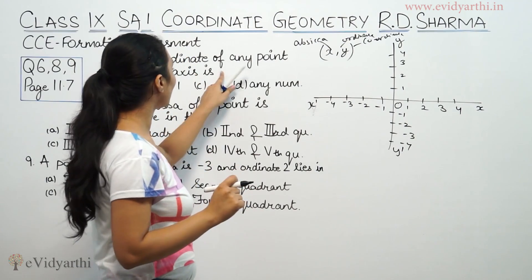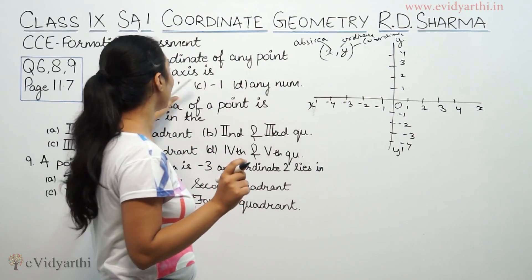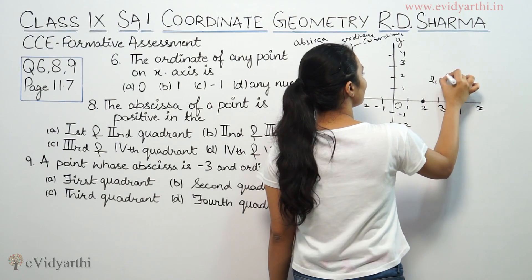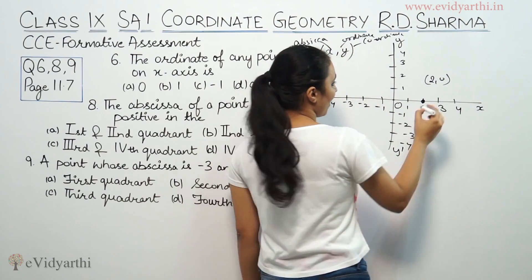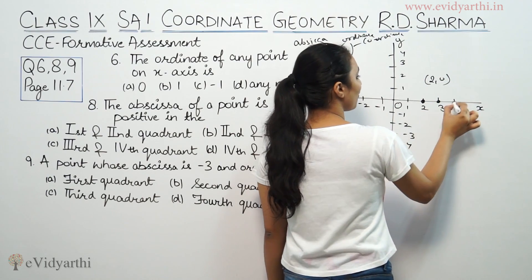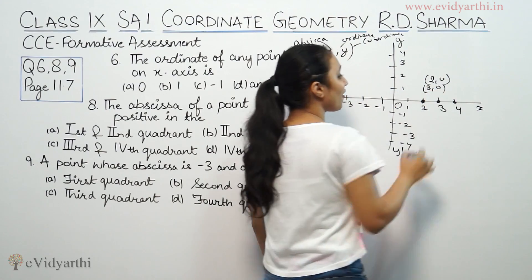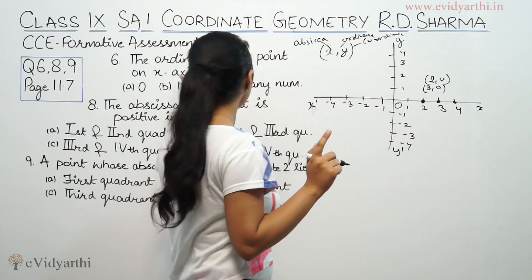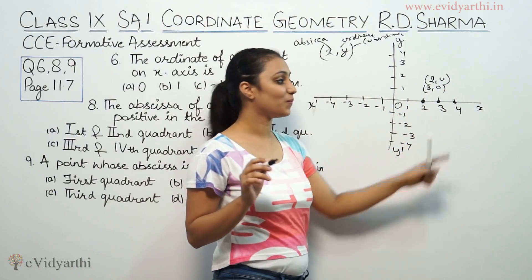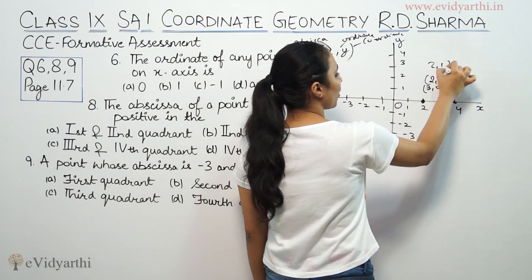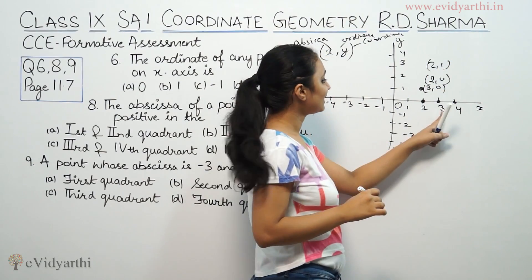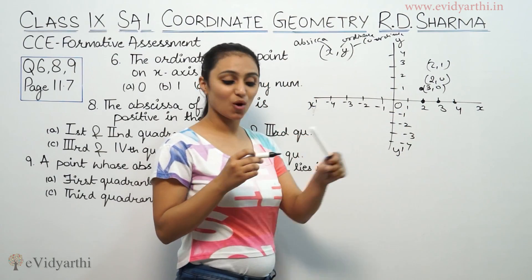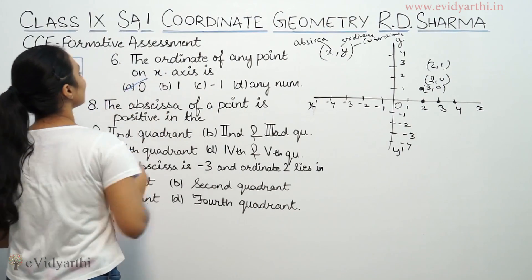So the question is about the coordinate of any point when each point lies on the x-axis. Suppose a point on the x-axis is at x equals 3, then y is 0. If x equals 4, then y is 0. So every time a point is on the x-axis, y is always 0. For example, if the point is (2,1) or (3,1), but when it lies on the x-axis, the y-coordinate will be 0.